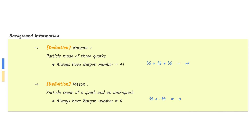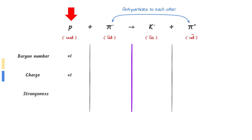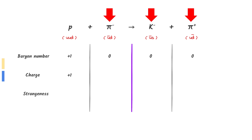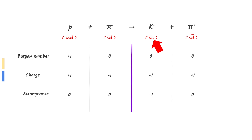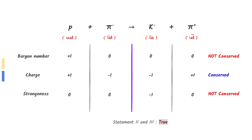A baryon is a particle made of three quarks and thus has a baryon number of plus one. A meson is a particle made of a quark and an anti-quark and thus has a baryon number of zero. Here is the interaction between a proton and a pion. The proton is a baryon made of two up quarks and one down quark, giving a baryon number of plus one and charge of plus one. The rest of the particles are mesons and so have a baryon number of zero. Only the particle with the strange quark will have a strangeness of minus one; all other particles have zero strangeness. From the values written, we can see that the baryon number and strangeness are violated in this interaction while the charge is conserved.